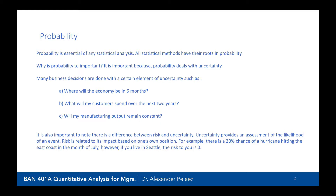Uncertainty provides an assessment of the likelihood of an event, while risk is more related to one's own position relative to the uncertainty of events. For example, if there's a 20% chance of a hurricane hitting the east coast in July, and you live in Seattle, the uncertainty probability is still the same, but your risk is zero. It's important to understand the difference between the two.